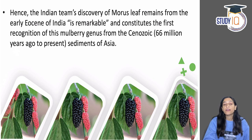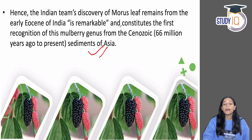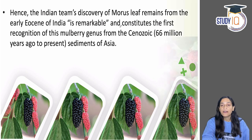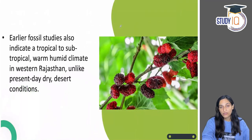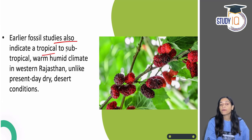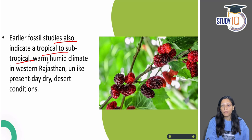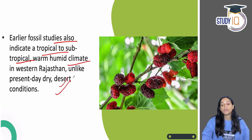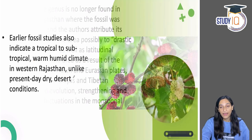From the Cenozoic era sediments, many more comparative studies can now be conducted. Earlier fossil studies indicated it must have grown in tropical to subtropical areas with a warm, humid climate in western Rajasthan, while today dry desert conditions exist in that area.